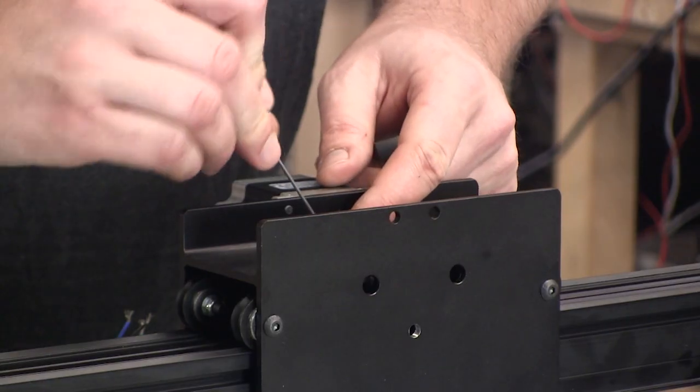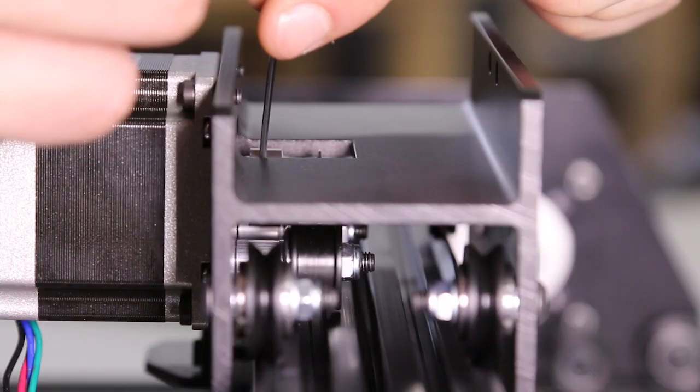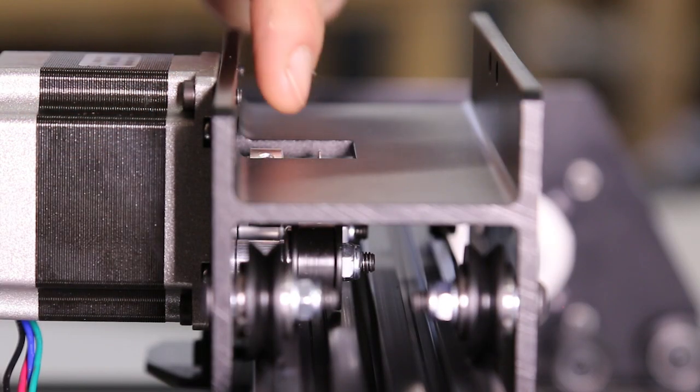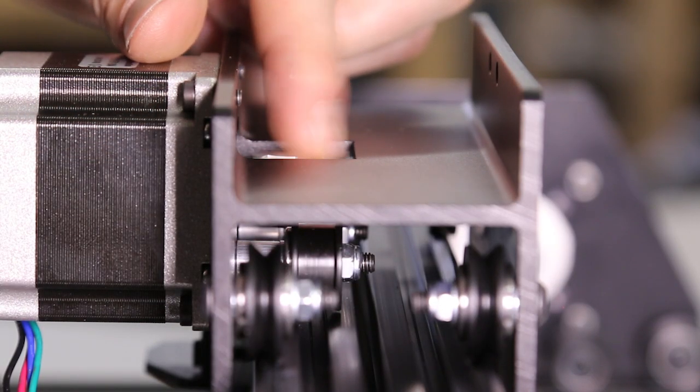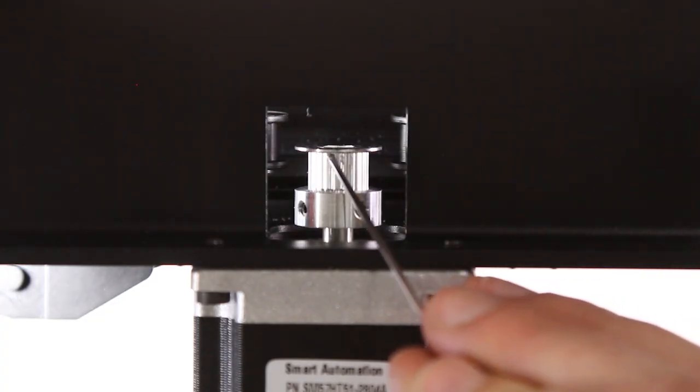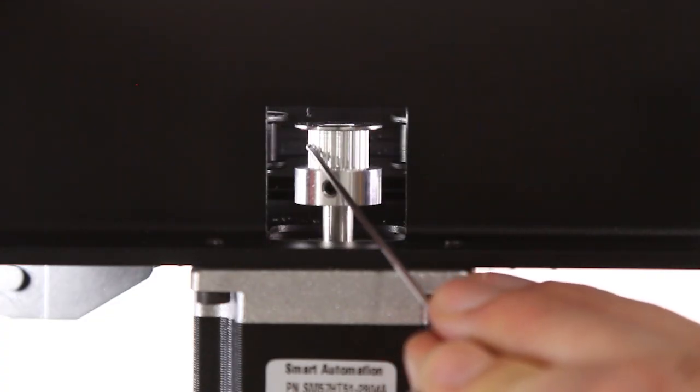Now we're going to thread the x-axis belting. First, we're going to adjust the pulley to make sure that it's in line with the smooth idlers. So loosen the set screws a little bit so that the pulley will slide on the shaft of the motor.